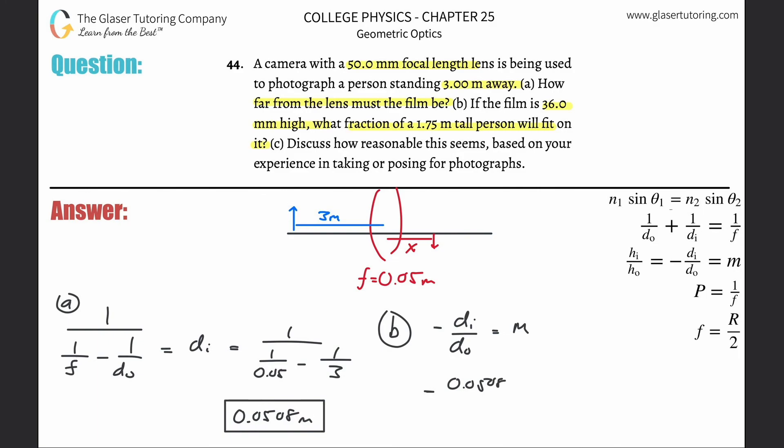So negative di, the image distance we calculated was a positive value of 0.0508. What that basically means, a positive value, means that it will be on the other side of the lens from where the object is. Anytime the object here is going to be greater than the focal length, that will always be the case.